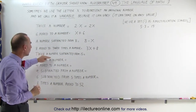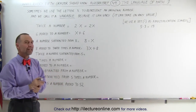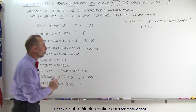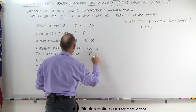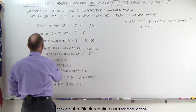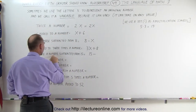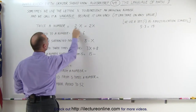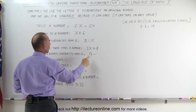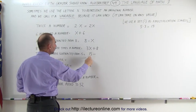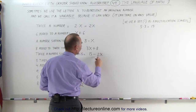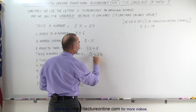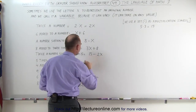'Twice a number subtracted from 15.' So we have the number 15, and we're going to subtract twice an unknown number from that. Remember, twice a number is 2X, so when we subtract that from 15, we get 15 minus 2X — twice an unknown number subtracted from 15.